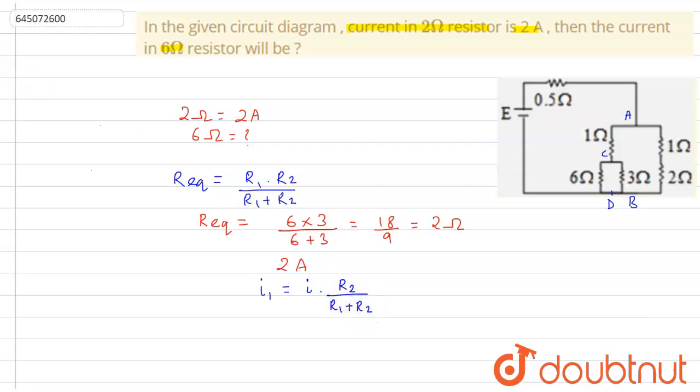So what we can see here is that if we apply the formula here, what will be the I1? We need to calculate I through 6 ohm. So the total current was 2 into R2. R2 is the resistance of the other one.